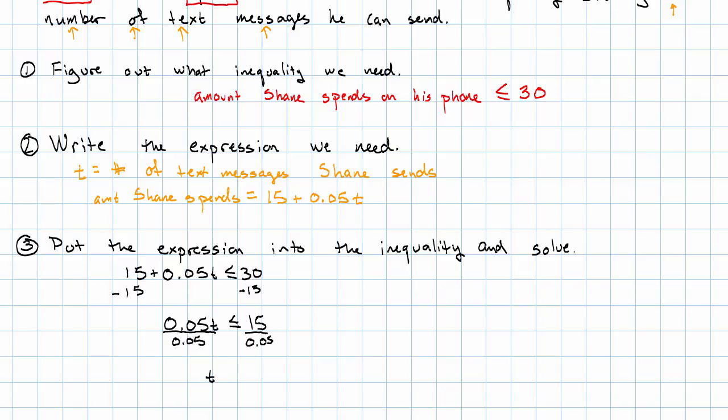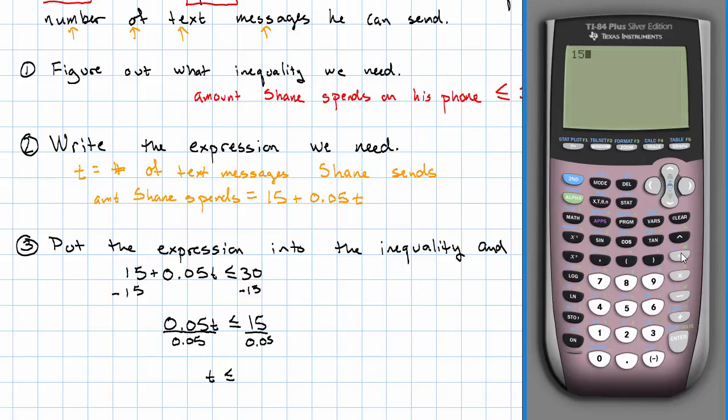And we're left with T is less than or equal to—that division sounds like a job for a calculator—300. So, Shane can send, at most, 300 text messages this month and still be within his budget.